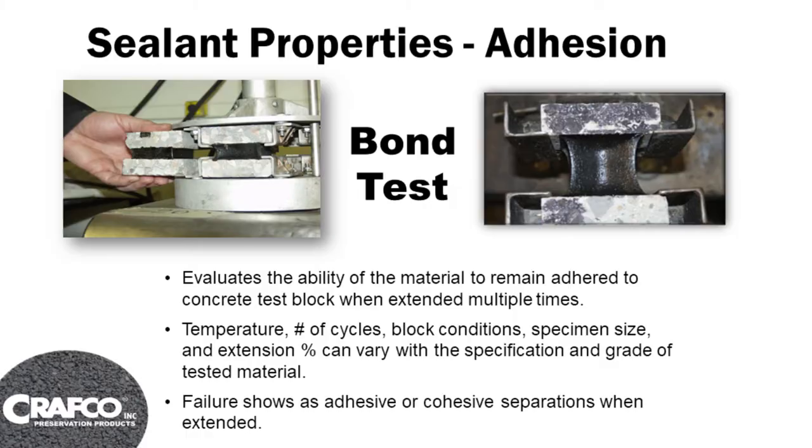They bring it out and give it an extension — it's a 1-inch sealant sample and a 50% extension. Then they let it come back on its own in one day and pull it again. They do it five times for the type 1, and it has to stay adhered to the concrete blocks without separating or splitting down the middle. For the type 2, they do the same thing but cool it down to minus 20 degrees Fahrenheit. Type 3 is much the same as type 2, but when they're done they submerge it in a water bath test, then put it in an oven to artificially age it and give it a resiliency test.